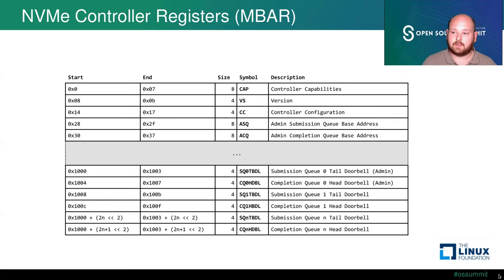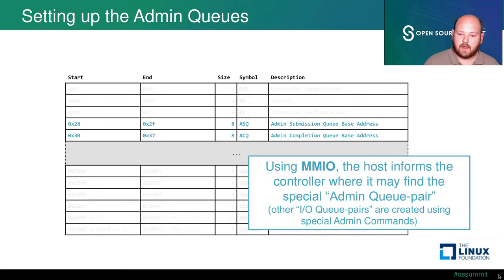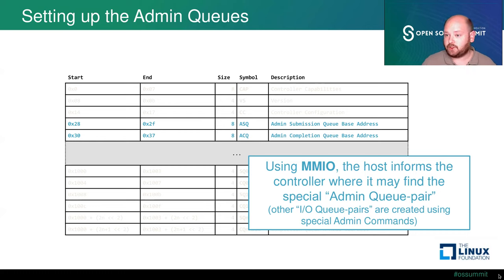Looking at the registers in tabular form: there's the controller capabilities register, a read-only register where the device reports its supported features; the version register indicating which specification version is implemented; and the controller configuration register where the host sets up device operating parameters. There are also two special registers — the admin submission queue base address and admin completion queue base address — which tell the device where to fetch admin commands and where to post completion entries.